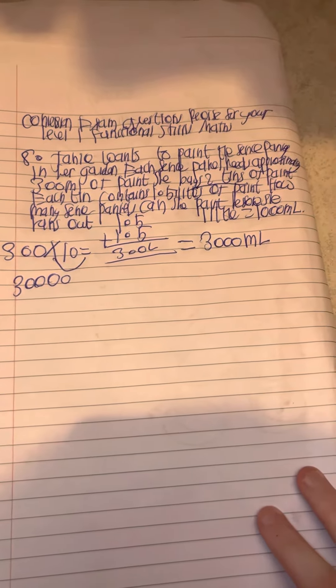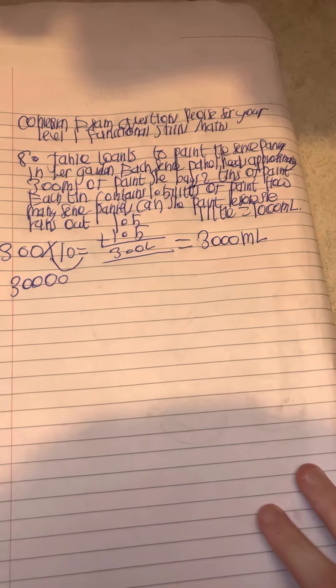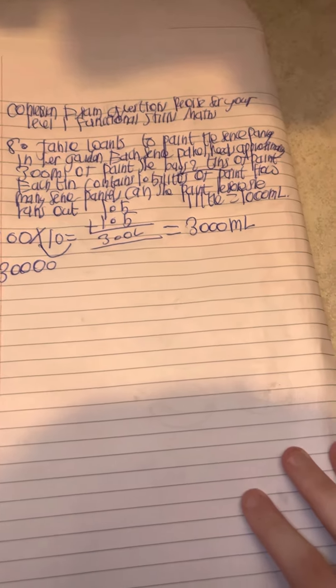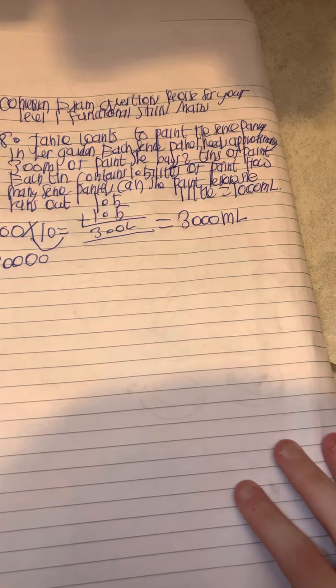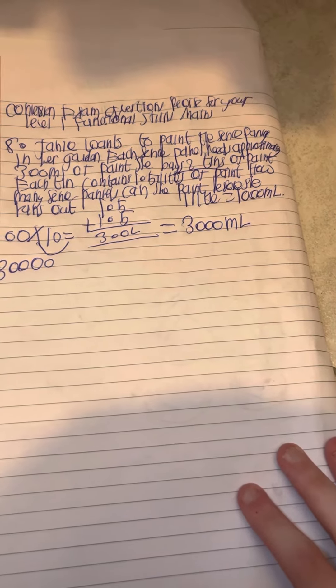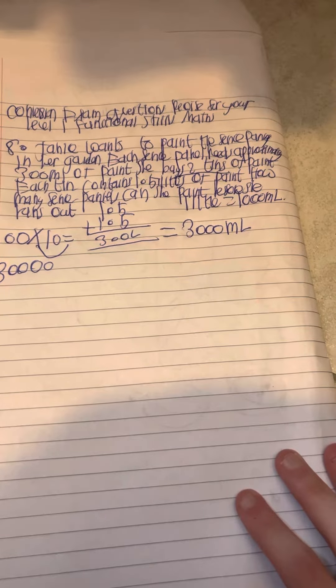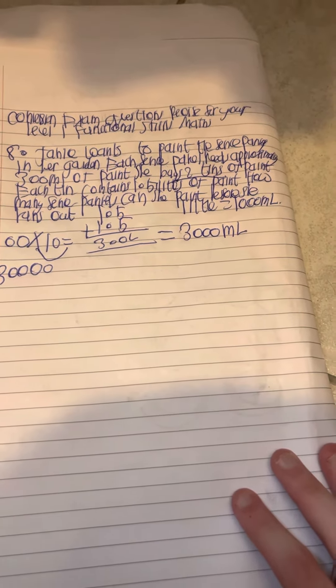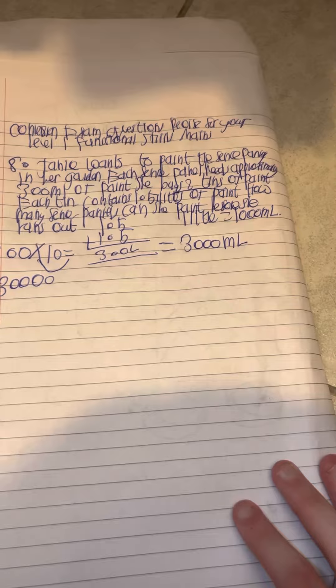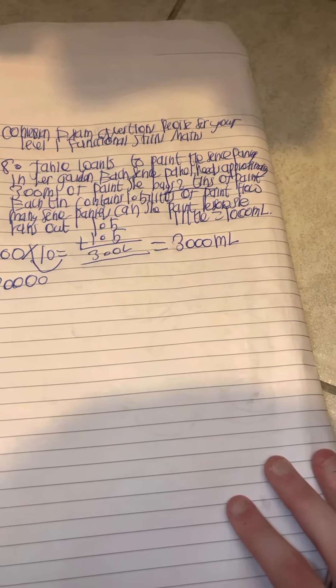Exam question, Edexcel Level 1 Functional Skills Maths exam. Janice wants to paint fence panels in her garden. Each fence panel needs approximately 300ml of paint. She buys two tins of paint. Each tin contains 1.5 litres of paint. How many fence panels can she paint before she runs out?